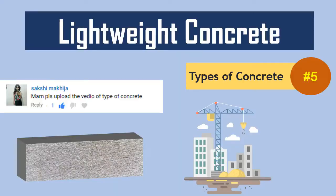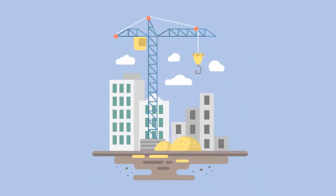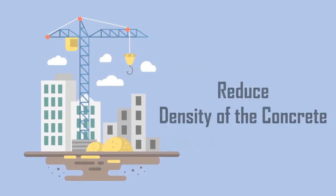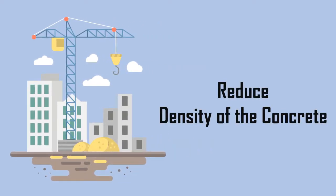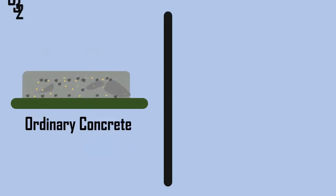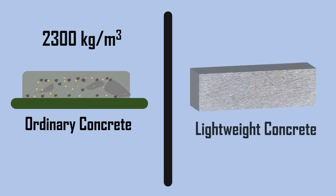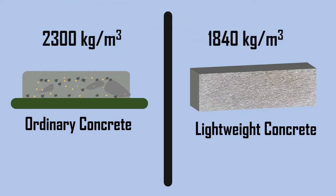Lightweight concrete is commonly used in the construction industry where it is important to reduce the density of the concrete. Ordinary concrete is quite heavy and its density is about 2300 kilogram per meter cube, whereas lightweight concrete has a density of less than 1840 kilogram per meter cube.